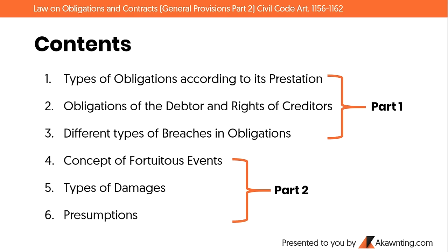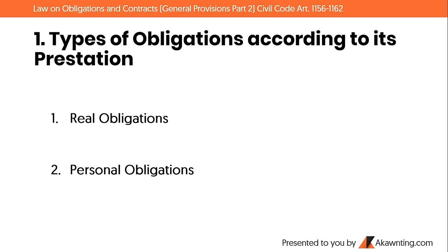So let's begin. Number 1: types of obligations according to its prestation. We categorize obligations into two: real obligations and personal obligations. Real obligations are obligations to give, while personal obligations are obligations to do or not to do.